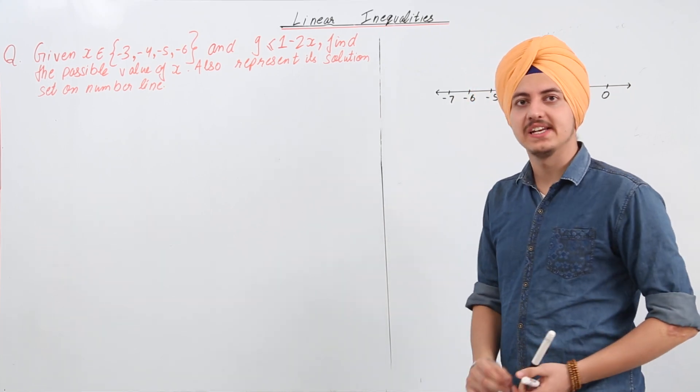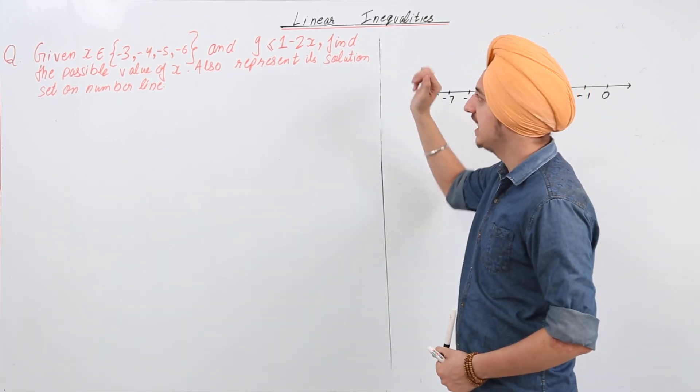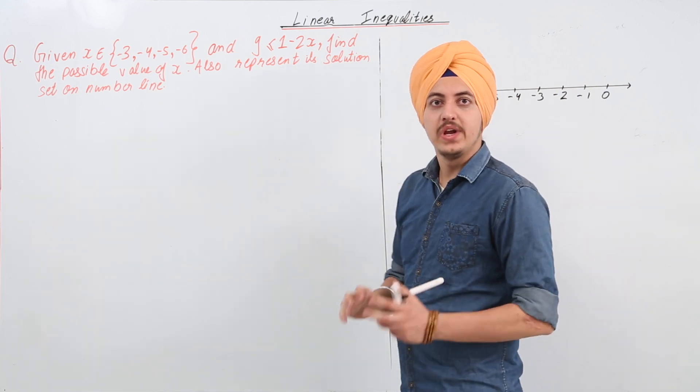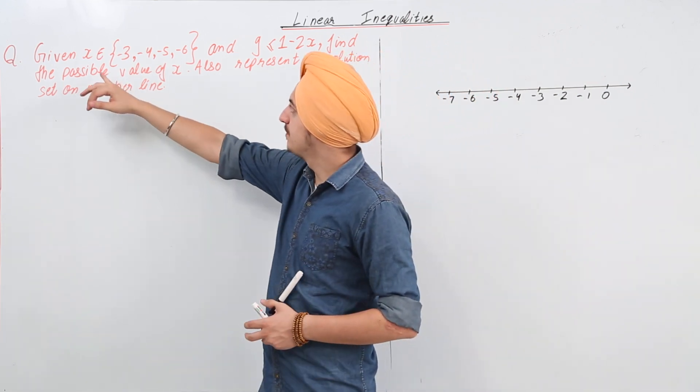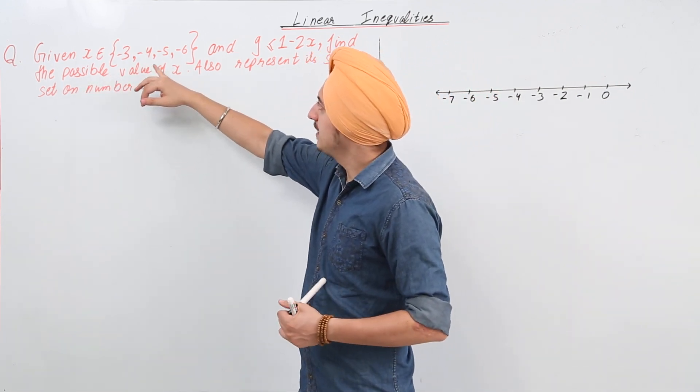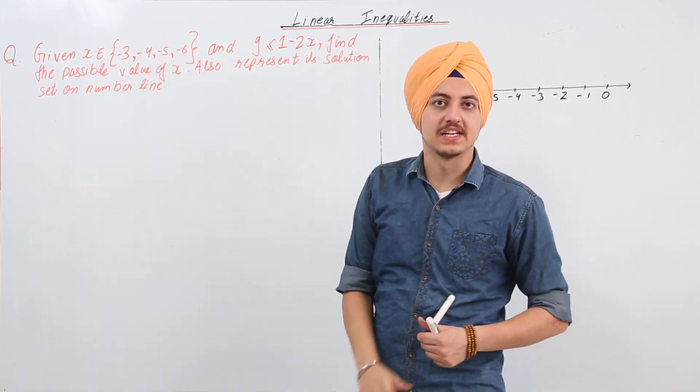Now a very basic question for a linear inequality says we have given that x belongs to minus 3, minus 4, minus 5, or minus 6.